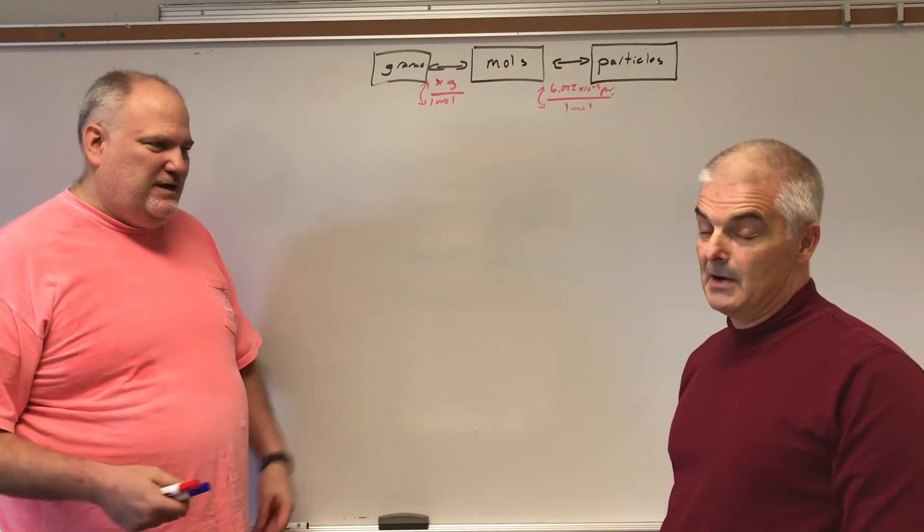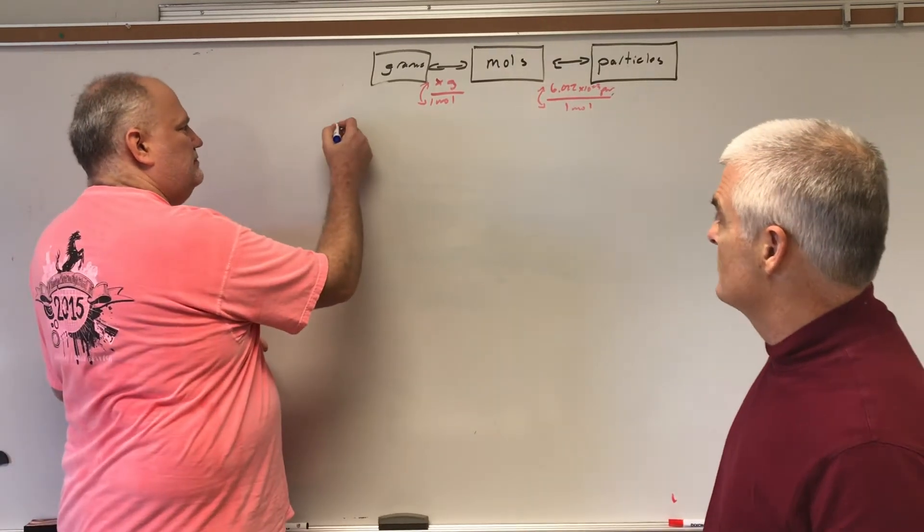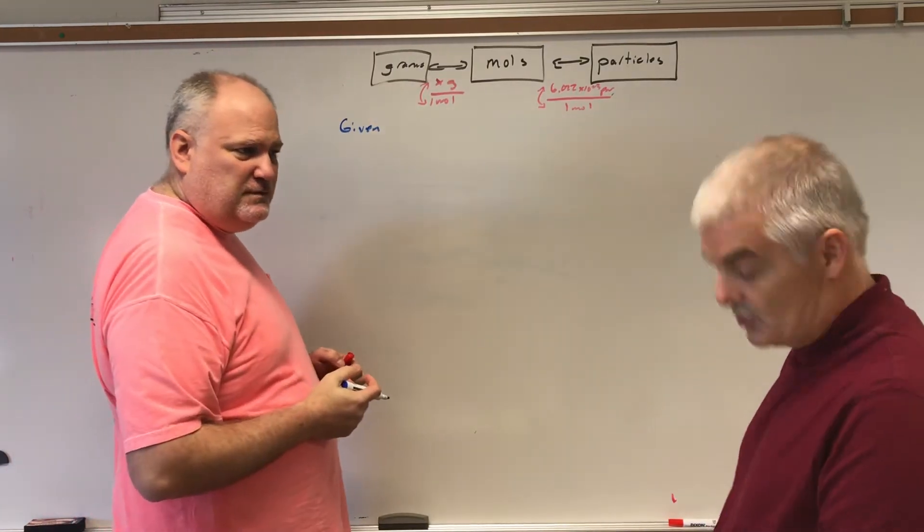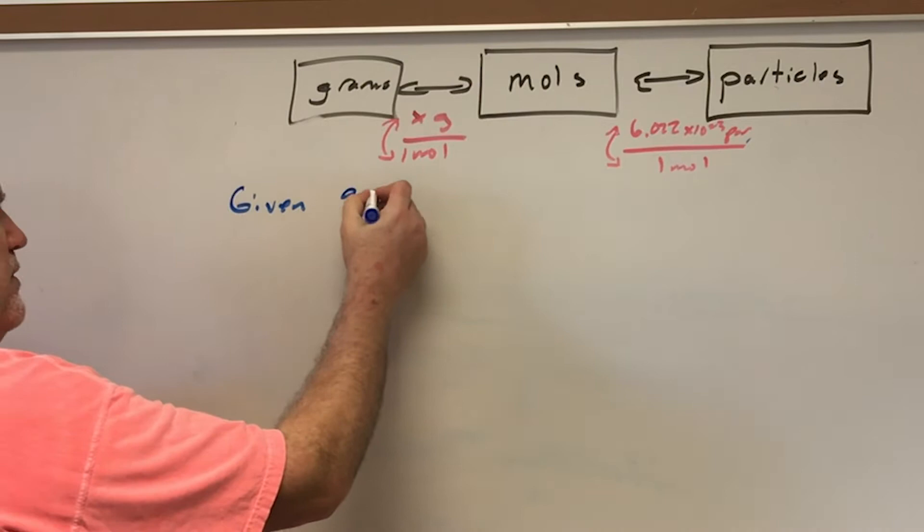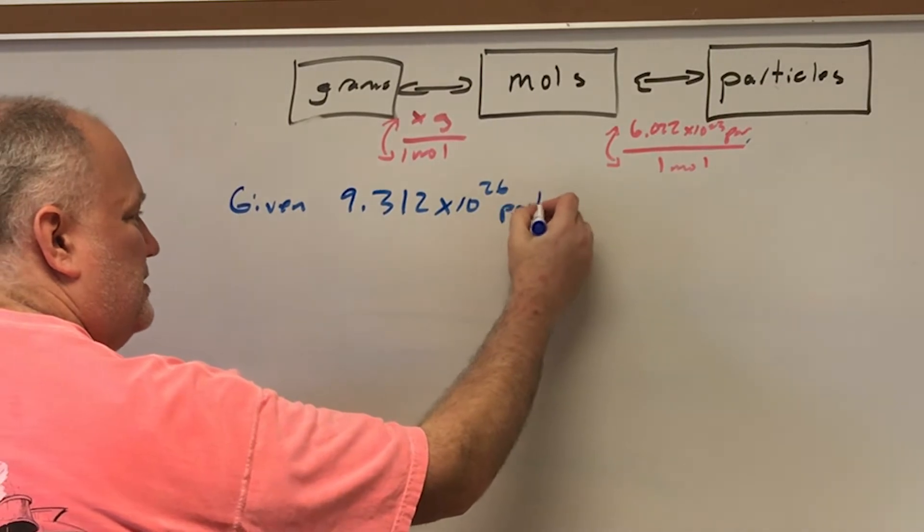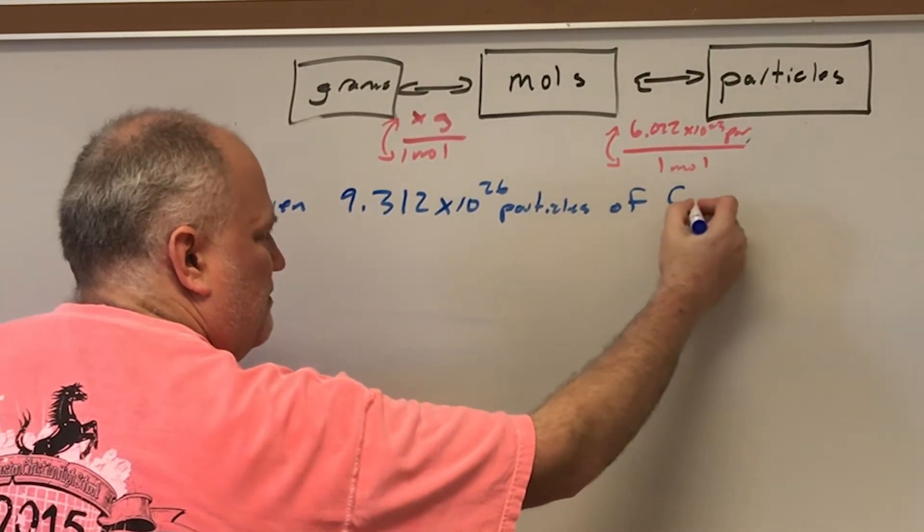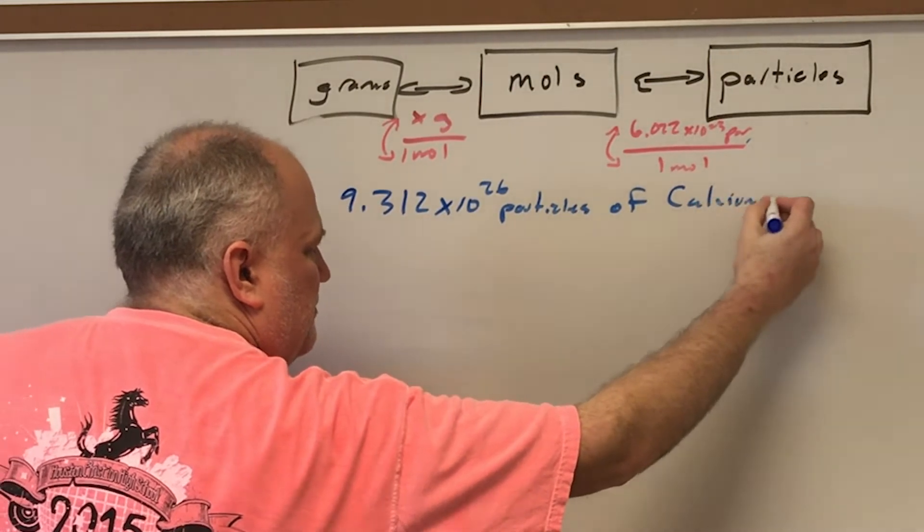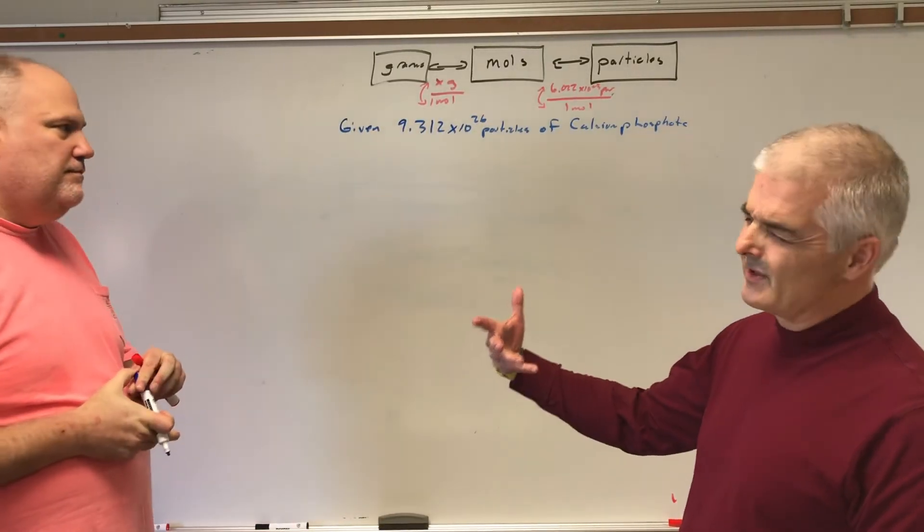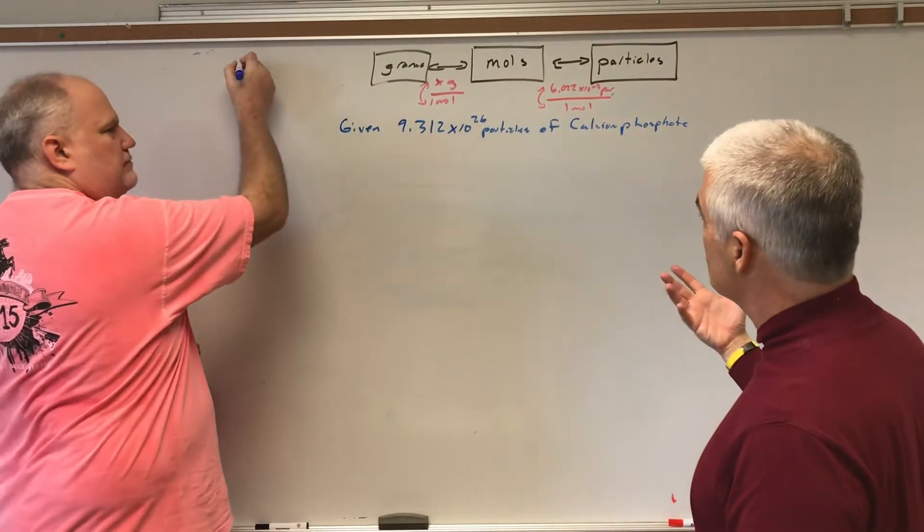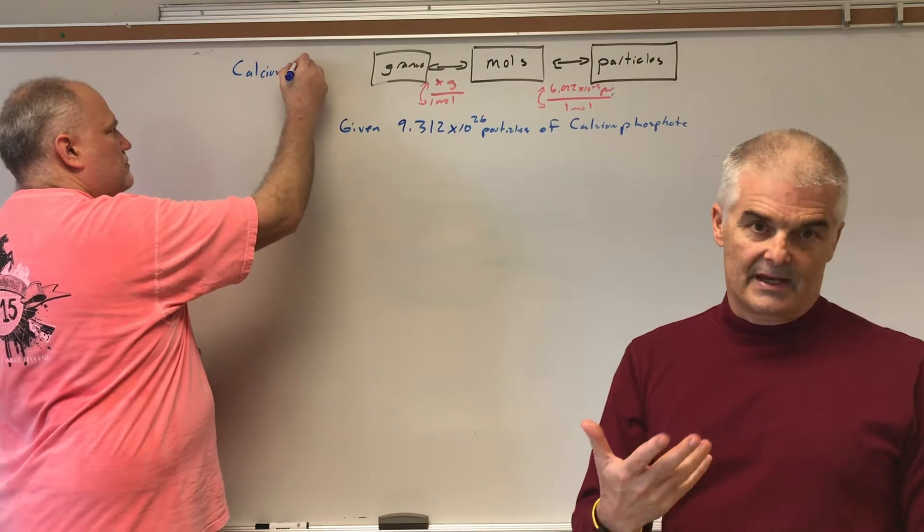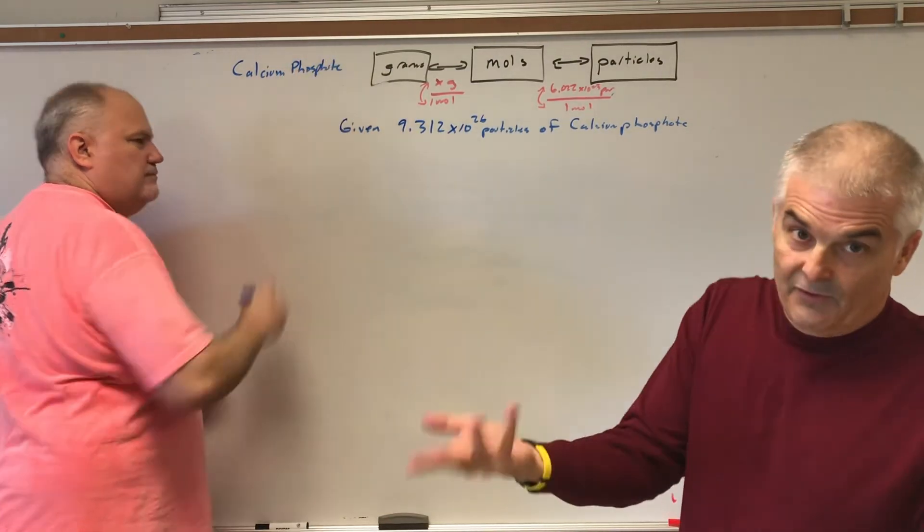While I'm a big fan of doing a really easy problem for you to follow, we're going to do the monster of all problems right now. Let's start with calcium phosphate. We're going to start with 9.312 times 10^26 particles of calcium phosphate. One thing I would recommend is trying to figure out what is the molar mass of calcium phosphate. But to find the molar mass, we have to find the formula of the calcium phosphate.